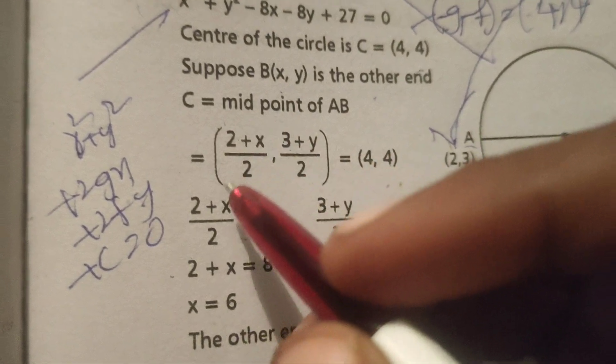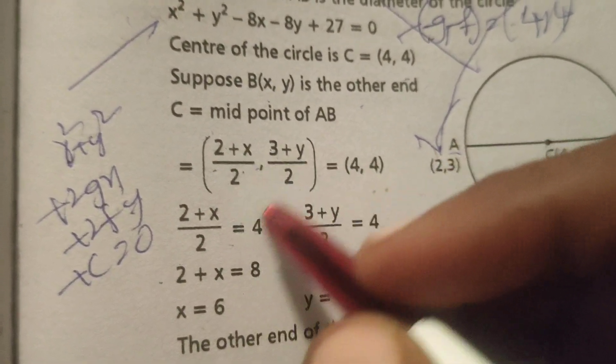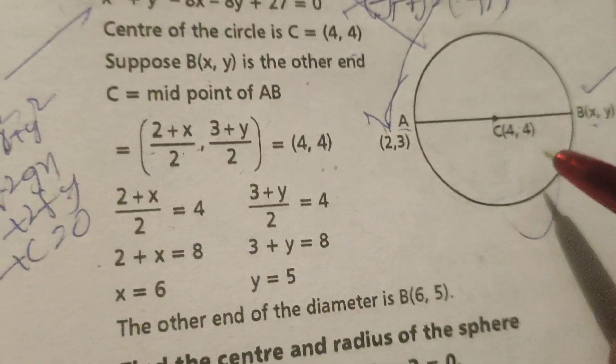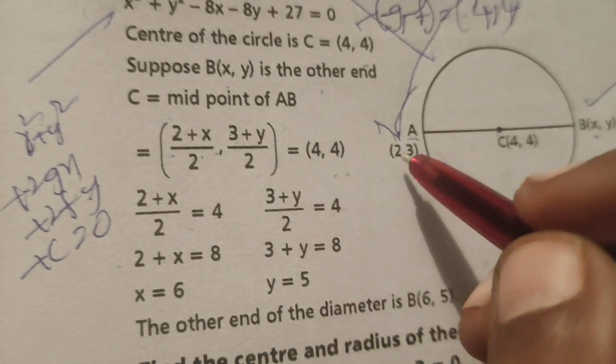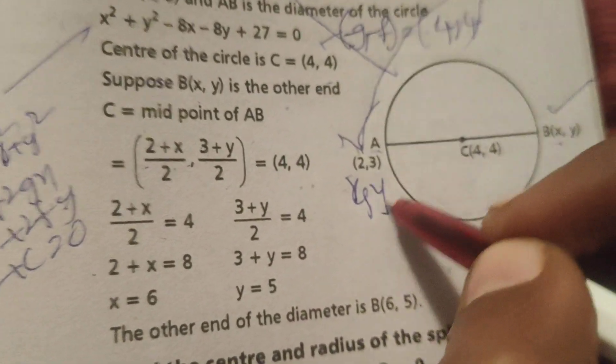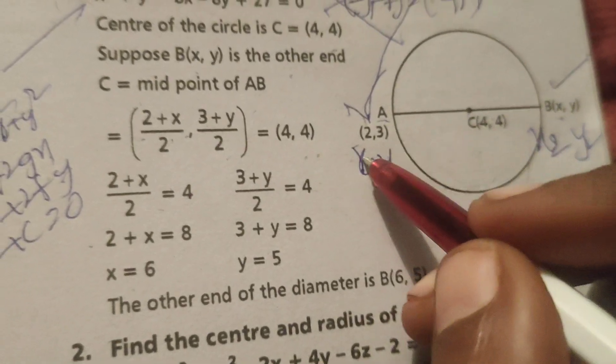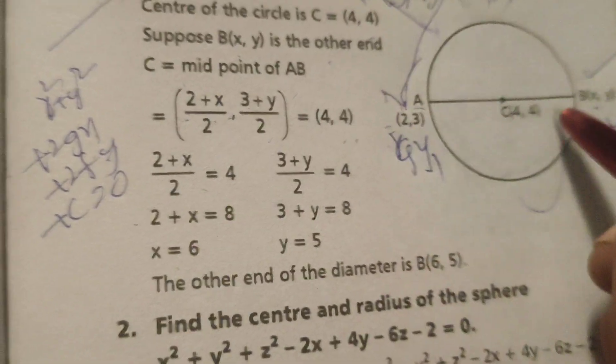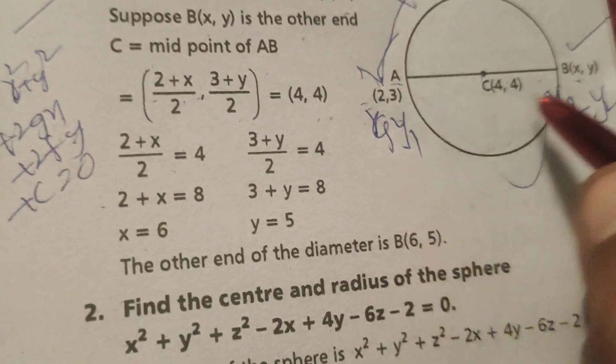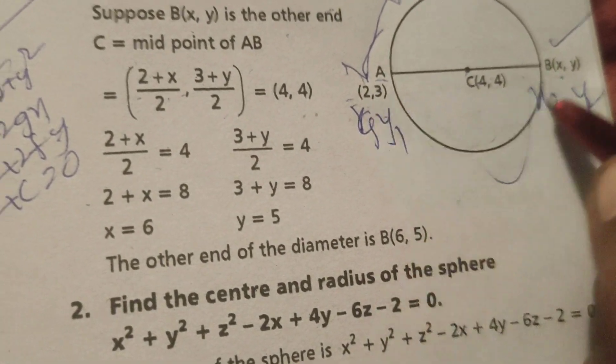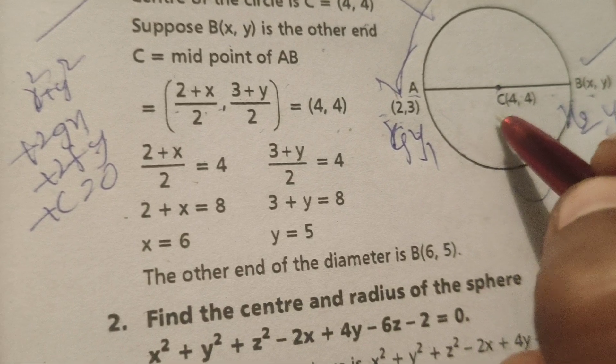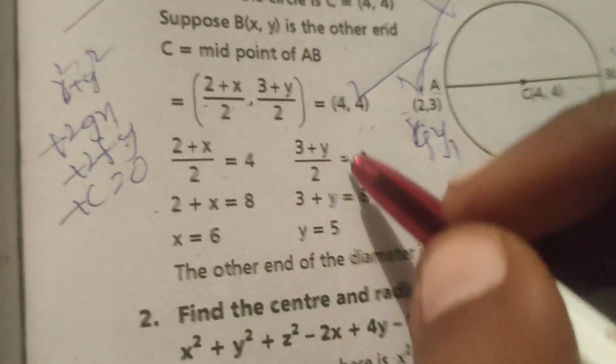The midpoint formula is (x₁ + x₂)/2, (y₁ + y₂)/2. So here this is x₁, y₁ and this is x₂, y₂. So (2 + x)/2, (3 + y)/2 equals (4, 4).